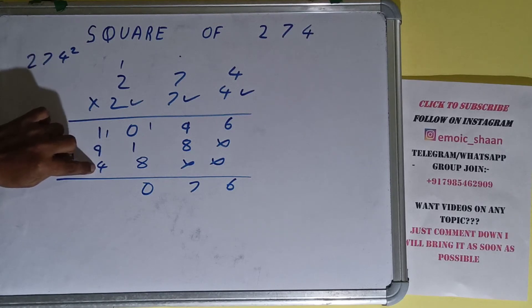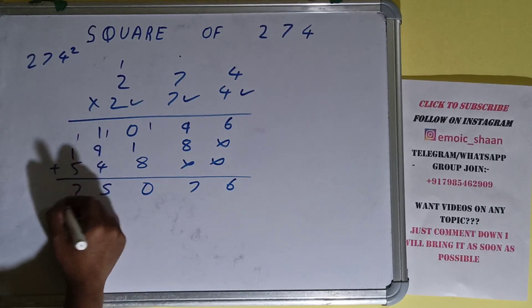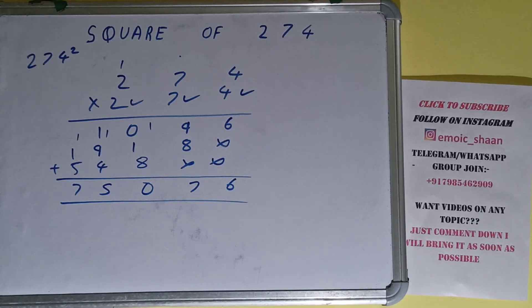So the answer will be 75076. That will be the square for the number 274. So this is all.